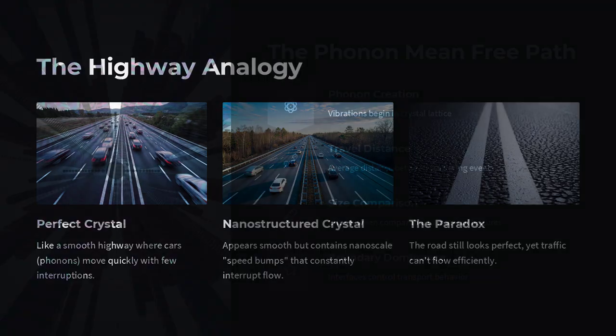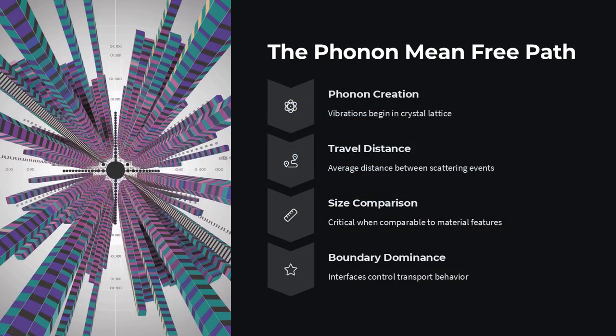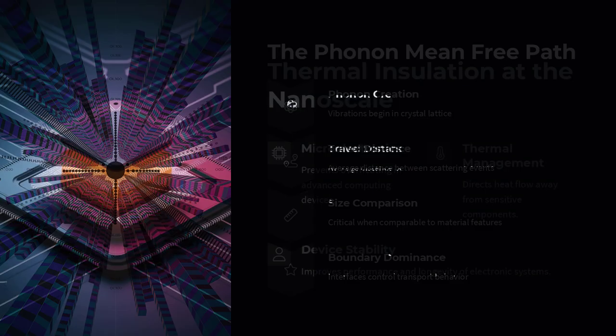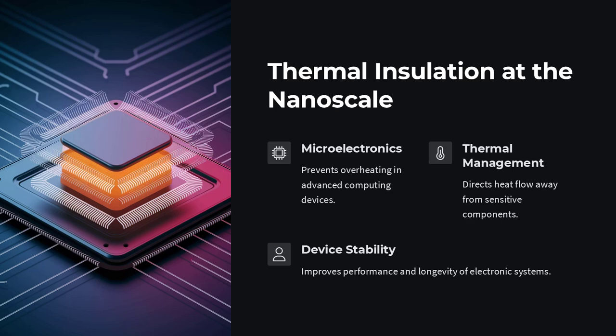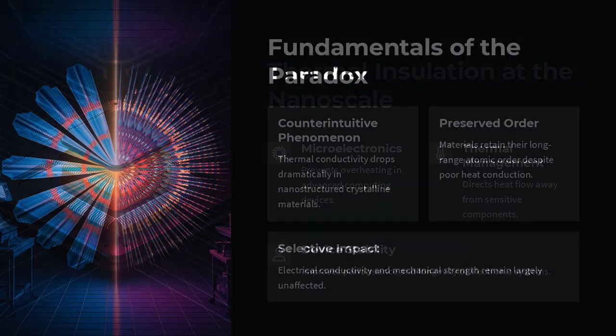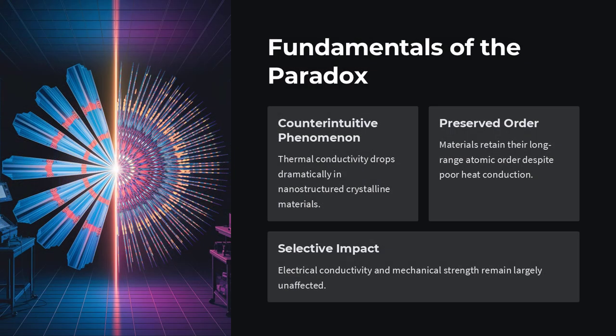So here's the paradox. Why do some nanostructured crystals, even those with near-perfect lattice order, show extremely low thermal conductivity? This puzzling behavior is known as the thermal conductivity reduction paradox. It flips our expectations and challenges the traditional models used to understand heat flow.